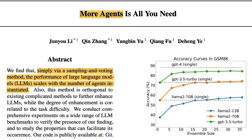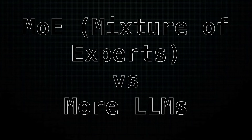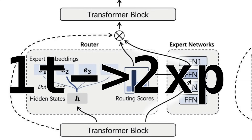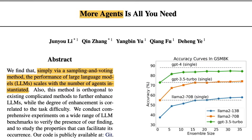Before we jump into the paper, I want to establish a very strong distinction. When I tell people about a concept like this, they immediately think about Mixture of Experts — but this is not Mixture of Experts. Mixture of Experts is one deep neural network where a feed-forward layer is replaced with a mixture of experts, where a token goes to two experts, both give a result, and a weighted average goes into the final outcome.